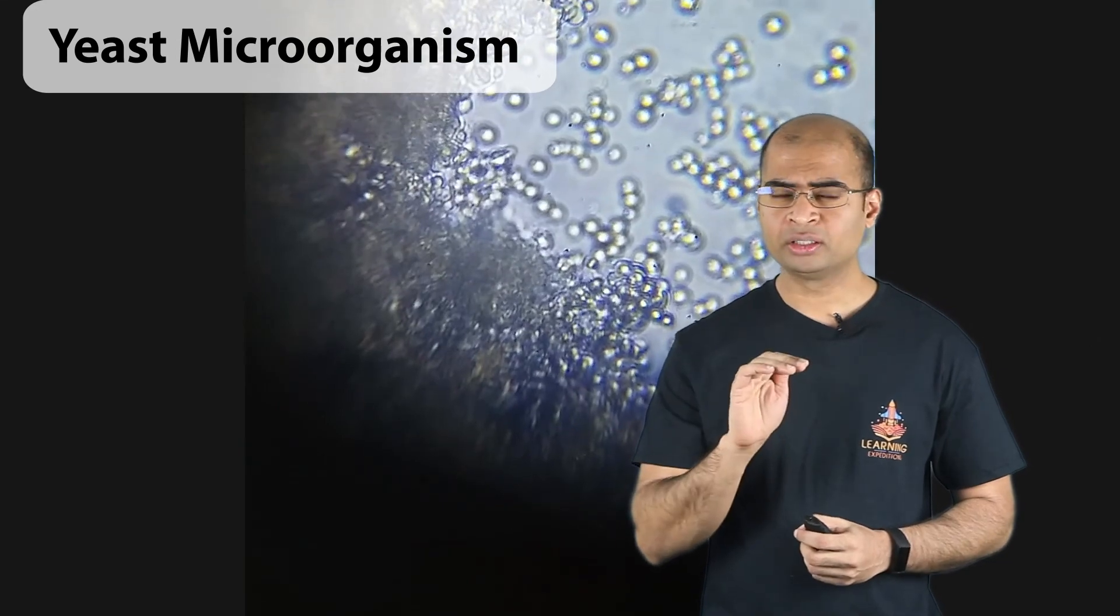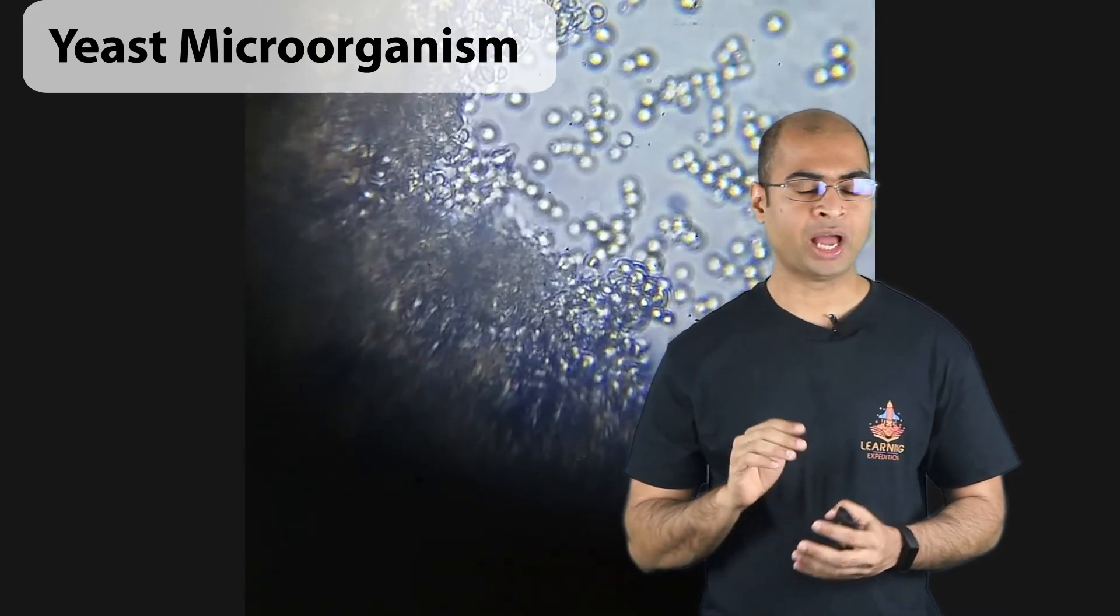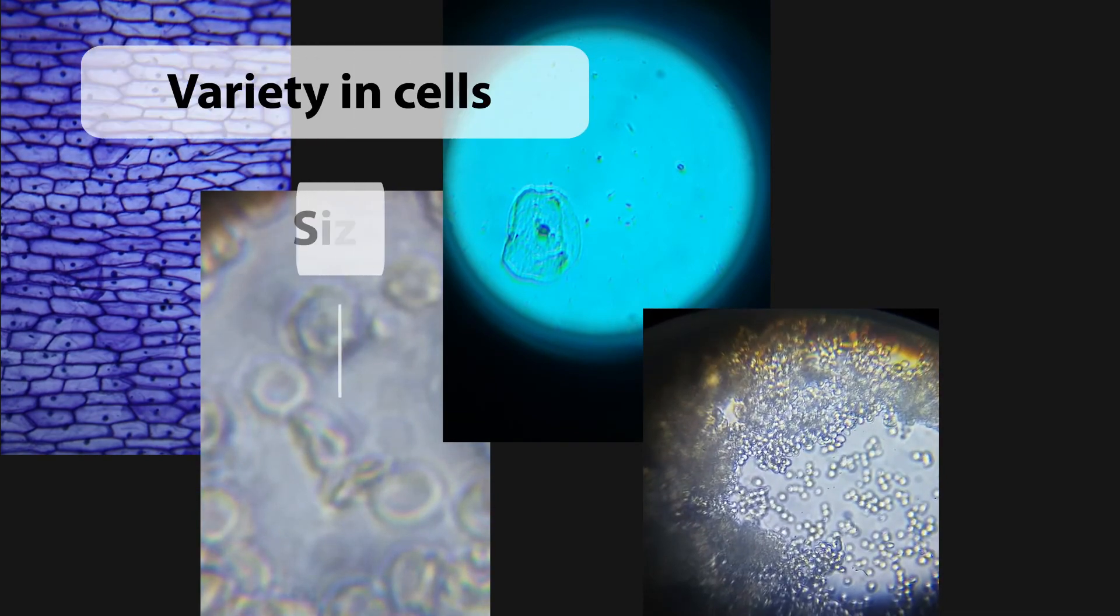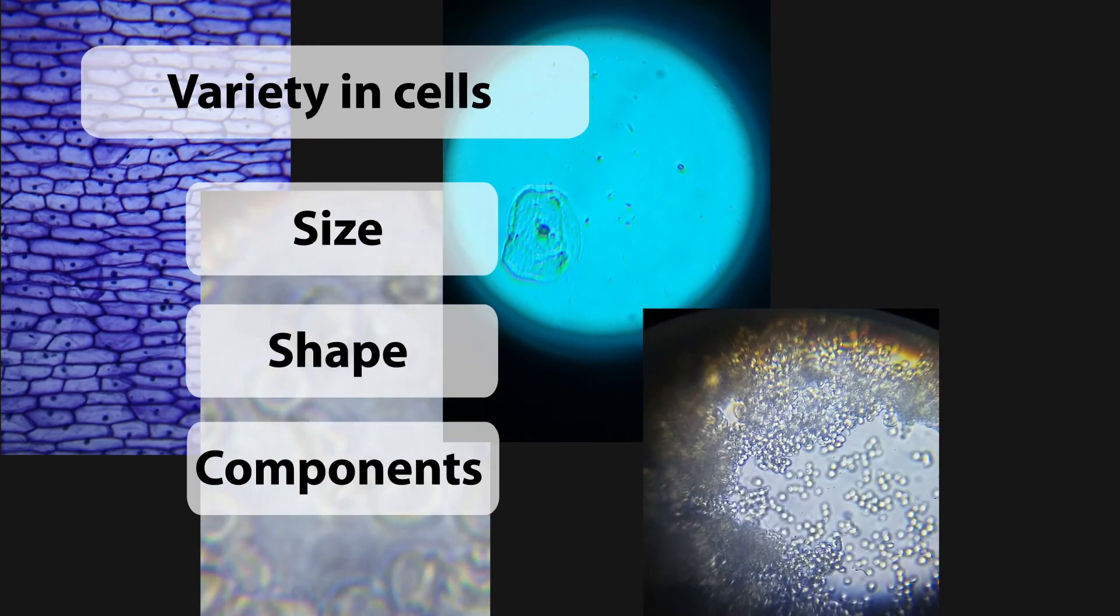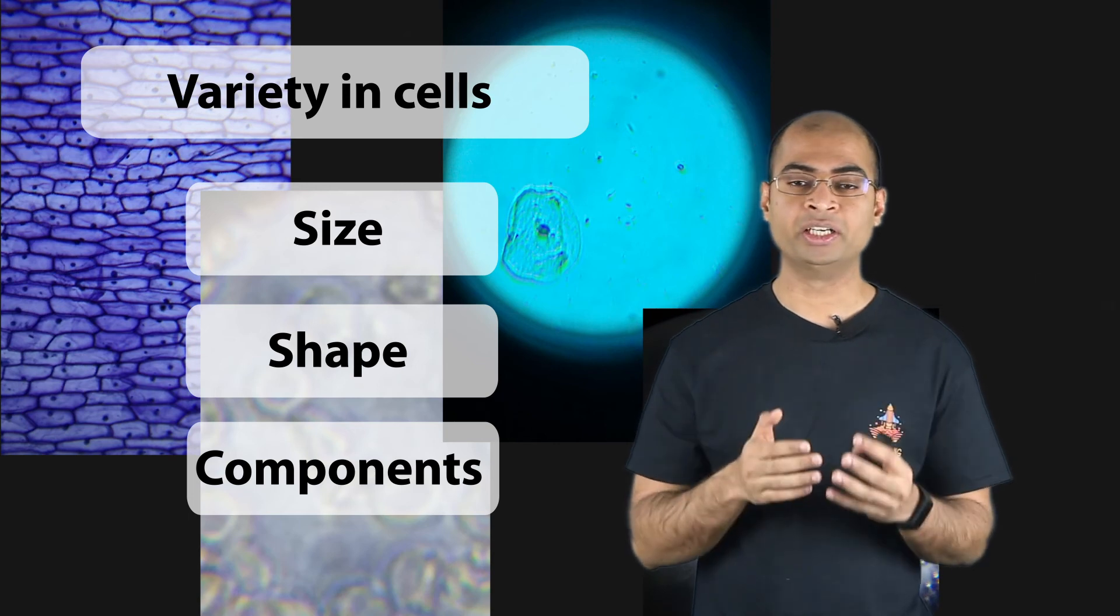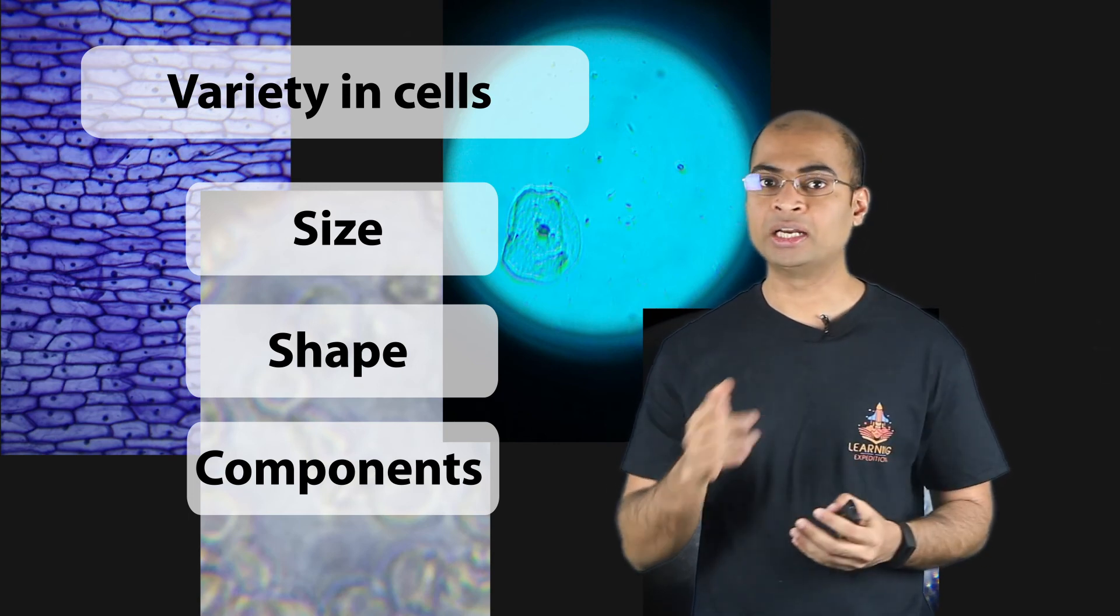At this point, you have probably noticed that different types of cells vary vastly in size, shape and even what components it has. This is a key property that allows the vast variety of capabilities we saw in living organisms earlier.